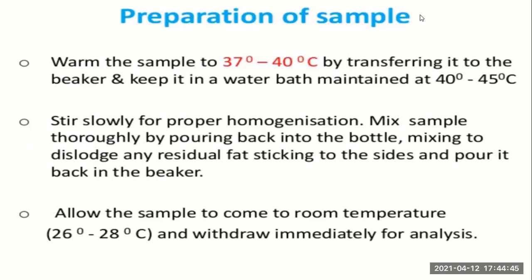Now methods of milk analysis. The first method is preparation of the sample, which includes these steps: warm the sample to 35–40°C by transferring it to a beaker or keeping it in a water bath maintained at 40–45°C. Stir slowly for proper homogenization. Mix the sample thoroughly by pouring back into the bottle to resolve any residual fat sticking to the sides, then pour it back into the beaker. Allow the sample to come to room temperature (26–28°C) and withdraw immediately for analysis.